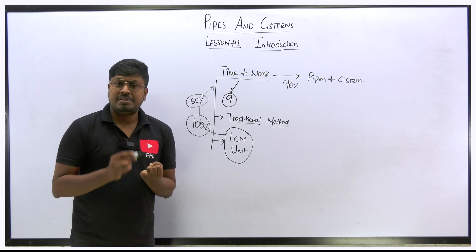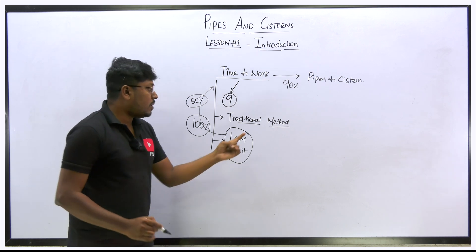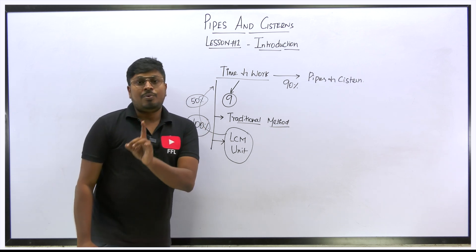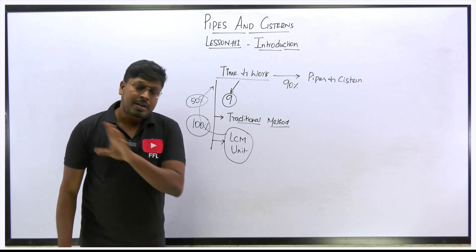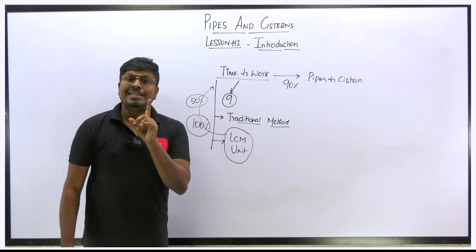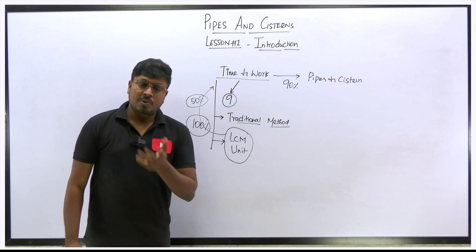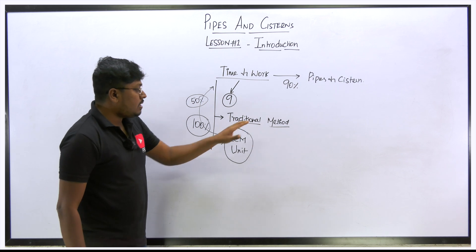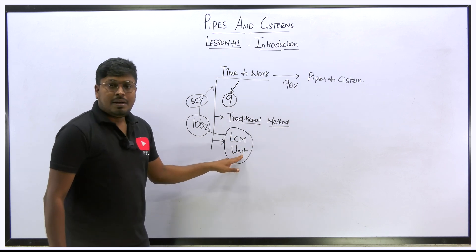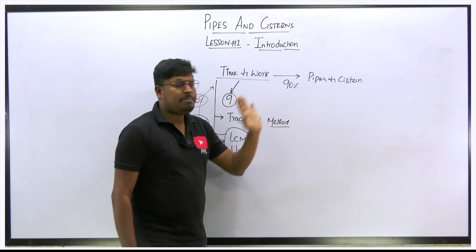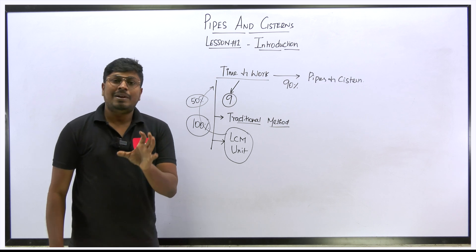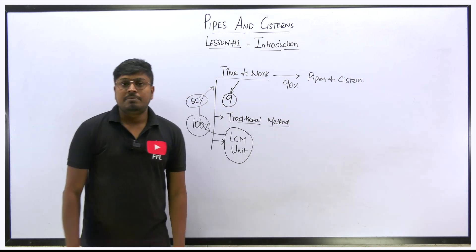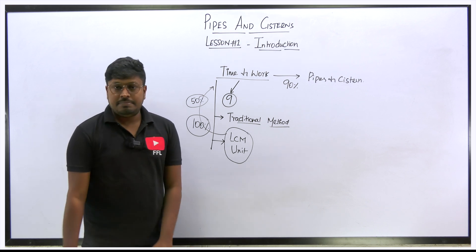Even in my YouTube channel while teaching Time and Work, for some questions I taught shortcuts, but for the same questions I also taught the traditional method — because only the traditional method will help you solve all questions in Quantitative Aptitude. Shortcuts won't always help you; the easiest method won't always help you. Only the traditional method will always help you, whether the question is easy or difficult. So always try to learn the traditional method.